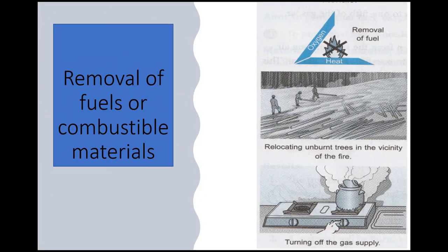Another way is the removal of fuels or combustible materials. For example, relocating unburned trees in the vicinity of the fire, and turning off the gas supply.